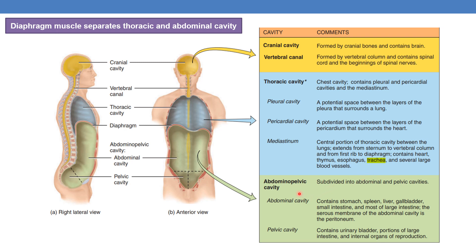Coming to the abdominopelvic cavity, it is subdivided into abdominal and pelvic cavities. The abdominal cavity contains the stomach, spleen, liver, gallbladder, small intestine, and most of the large intestine. The serous membrane of the abdominal cavity is called the peritoneum. The pelvic cavity contains the urinary bladder, portions of the large intestine, and the internal organs of reproduction.